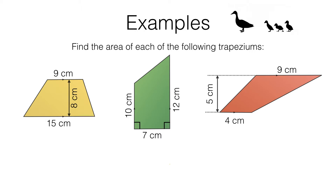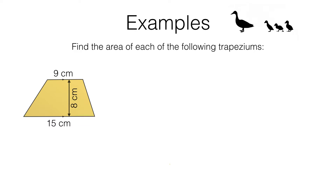Let's look at the first one. We've got a trapezium here — we can see the two parallel sides, and the perpendicular distance between the two sides is eight centimetres. To make this diagram a little bit easier to work with, I'm going to move this label outside the trapezium.